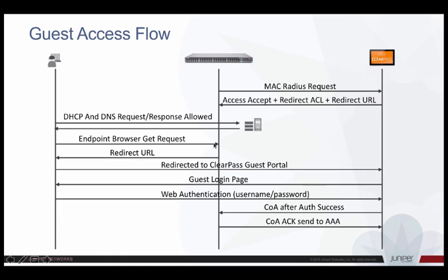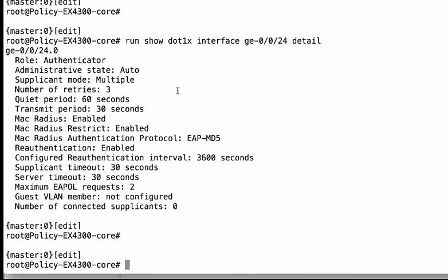When the guest user opens a browser to access any web resources, the switch redirects the web browser to the guest user authentication page on the ClearPass server. Here the guest user can log in with their guest user credentials. At this point, if the guest user provides correct credentials, CPPM will send a CoA telling the switch to place the endpoint in a different VLAN for guests, or apply a firewall filter on the port to allow limited access for the guest user. This workflow is based on RADIUS attributes and does not use any proprietary messages between Juniper EX switches and Aruba CPPM.